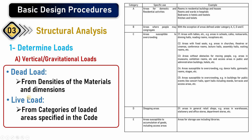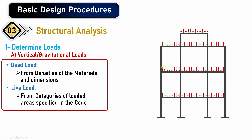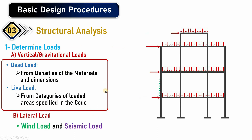For dead loads, you go to the code, take the unit weights, multiply by the proper dimensions of the element, and calculate the dead load for that specific material or structural part. The dead load and live load both act downward toward the center of the earth as vertical loads. On the other hand, there are also lateral loads acting in the horizontal direction.